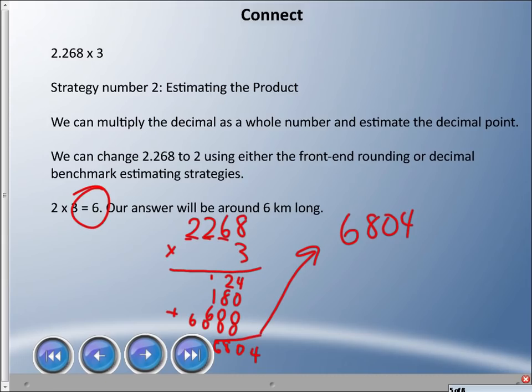Remember we had an estimate and we said our estimate would be around 6. We have this answer in the thousands. We got to place our decimal point. It makes the most sense to place it here, that's about 6. 6.804, six and eight hundred four thousandths. Hey, that's the same answer we had in the last one.